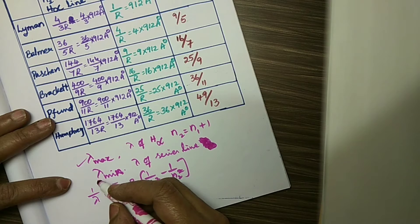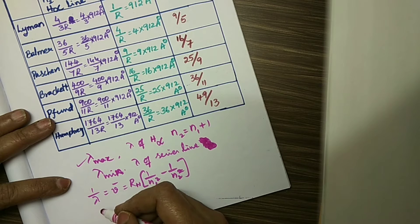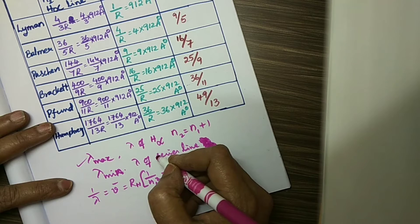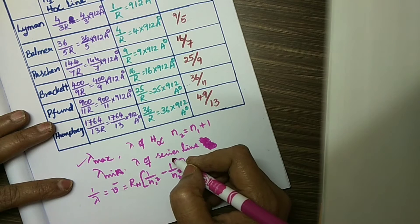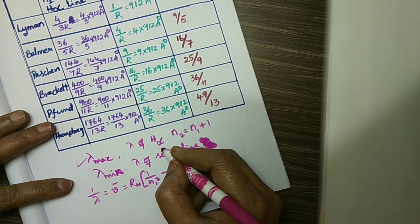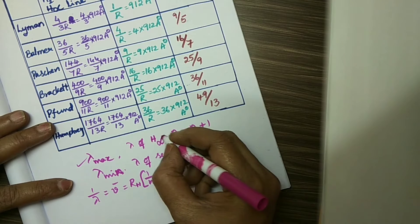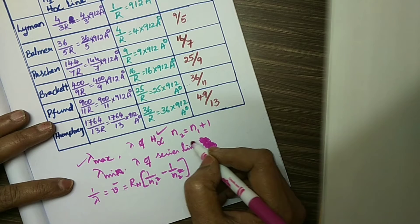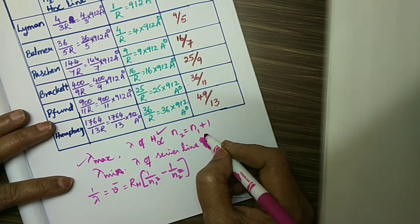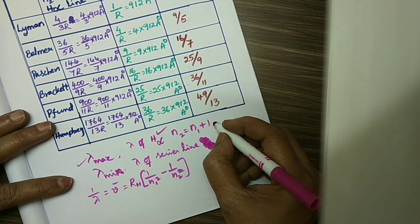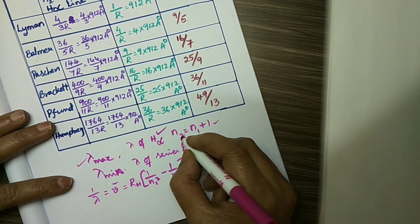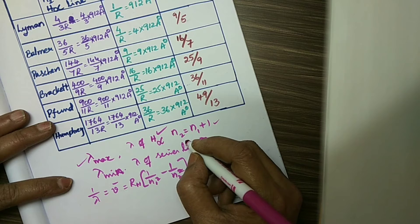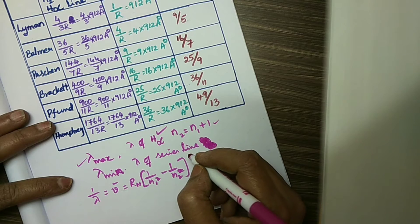First, lambda max. What is lambda max? Lambda max is the wavelength of the first line — the H alpha line. For H alpha line, N2 is equal to N1 plus 1, from which the electron is coming back to the first shell.